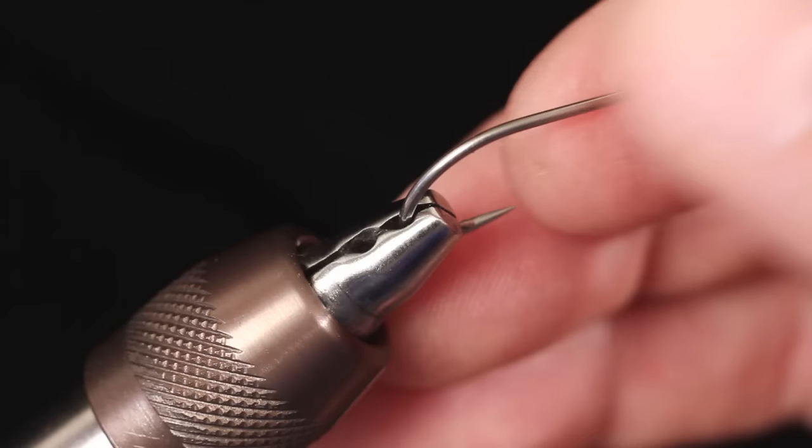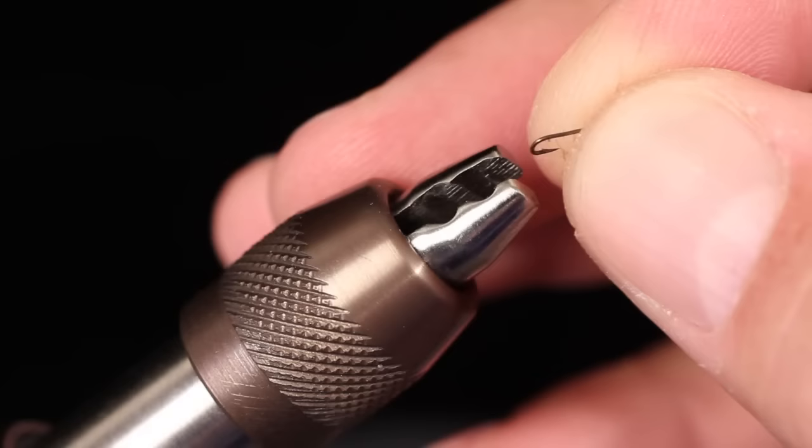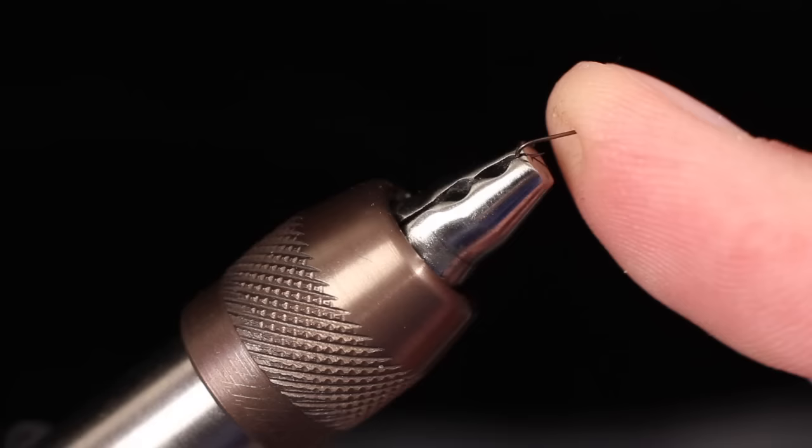The next smaller groove holds medium-sized hooks, while the serrated section of the jaw tips works best for holding the smallest hooks.